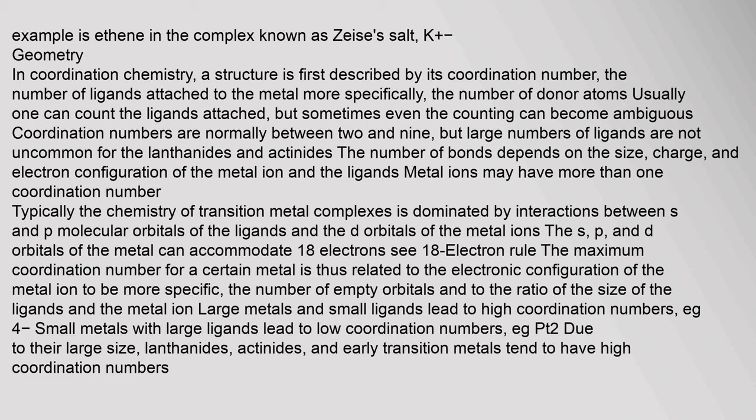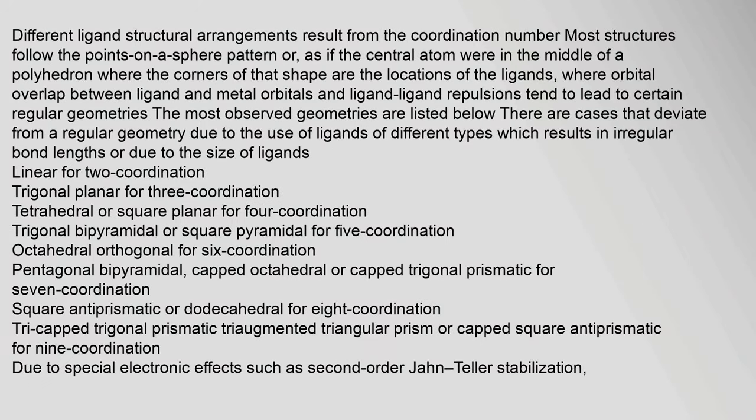The maximum coordination number for a certain metal is related to the electronic configuration of the metal ion — specifically the number of empty orbitals — and to the ratio of the size of the ligands and the metal ion. Large metals and small ligands lead to high coordination numbers, while small metals with large ligands lead to low coordination numbers. Lanthanides, actinides, and early transition metals tend to have high coordination numbers. Most structures follow the points-on-a-sphere pattern, as if the central atom were in the middle of a polyhedron where the corners are the locations of the ligands.